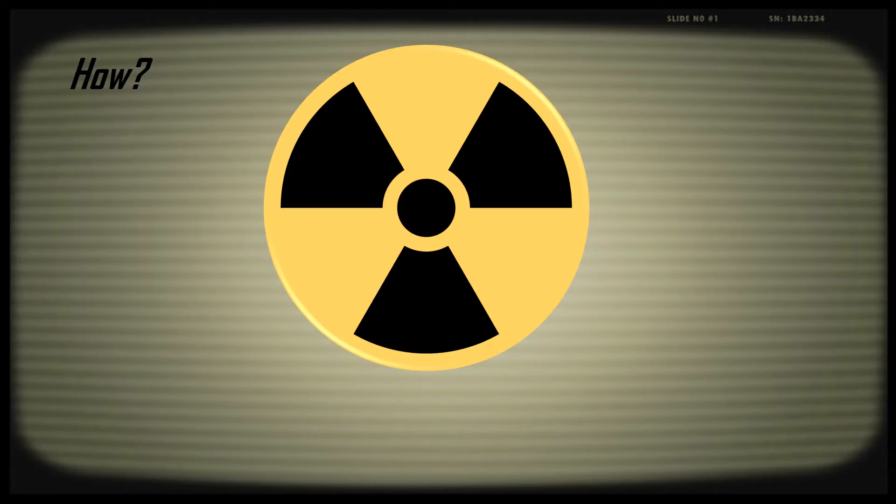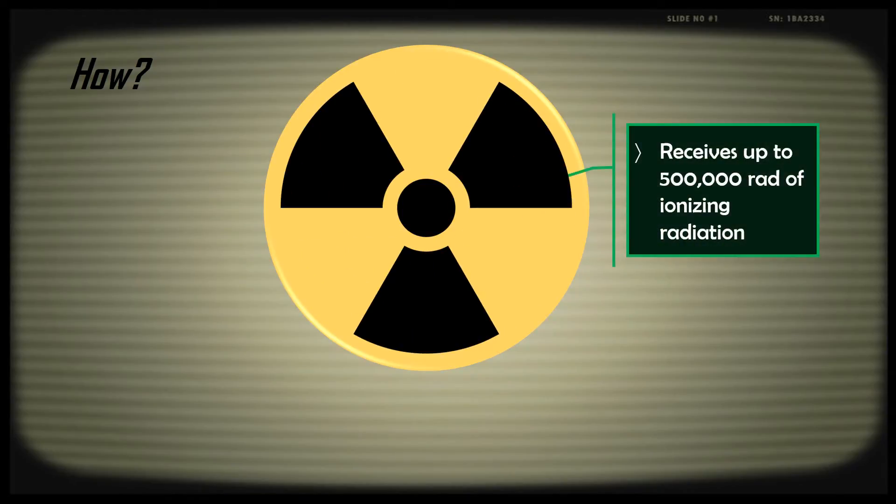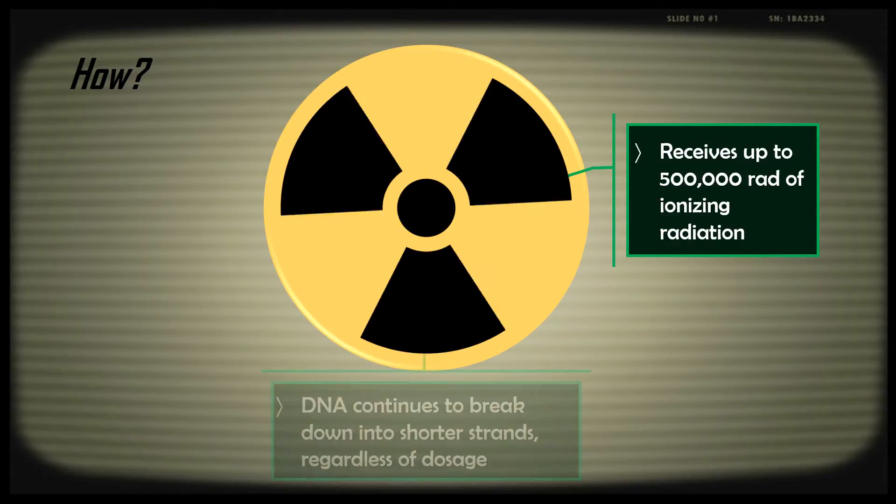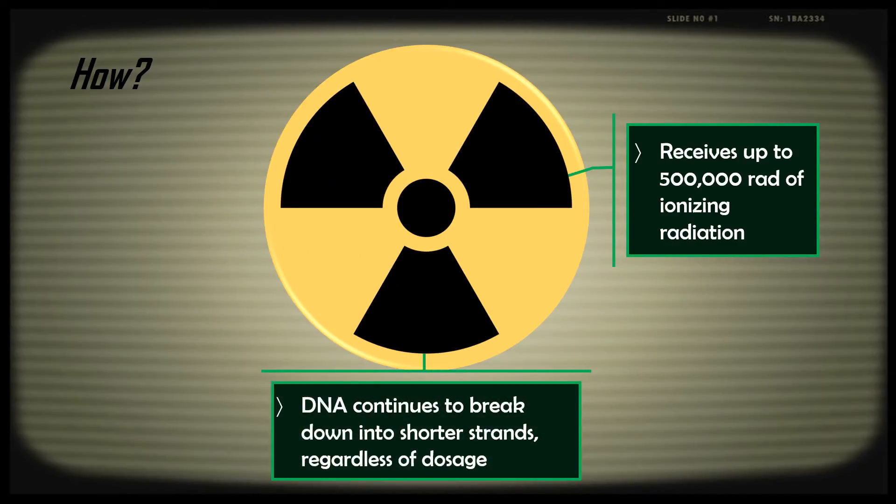So you might wonder, how is Deinococcus radiodurans exactly able to withstand such high levels of radiation? Well, very high intracellular concentration of manganese-2 ions relative to iron. Rather than providing protection against initial burst of radiation, high intracellular manganese acts against sudden increase in the damaging reactive oxygen species during the recovery from radiation.